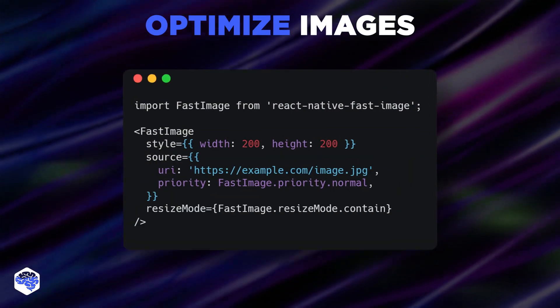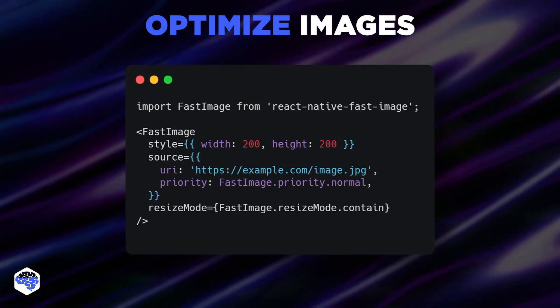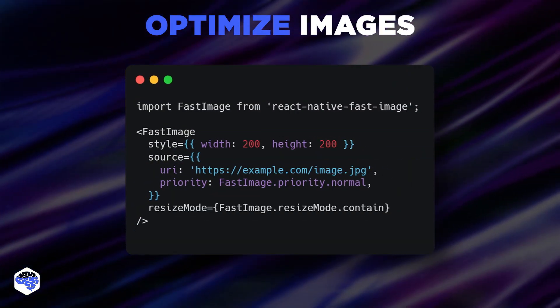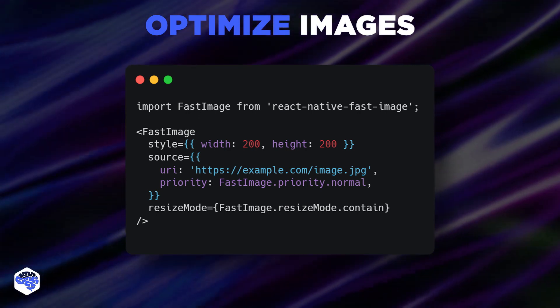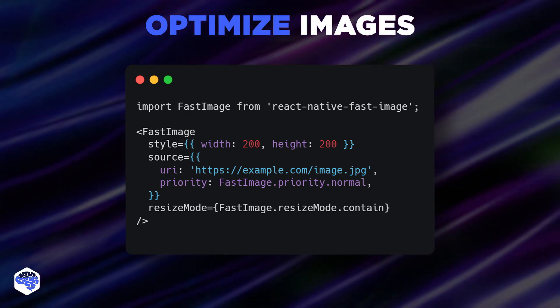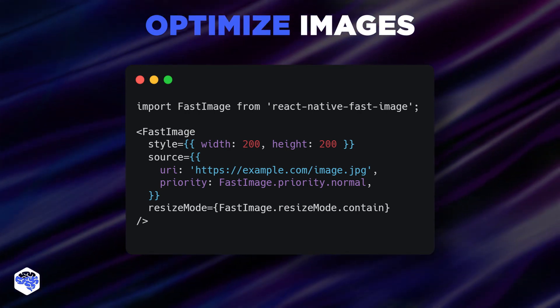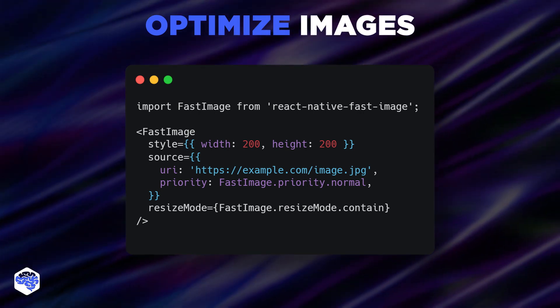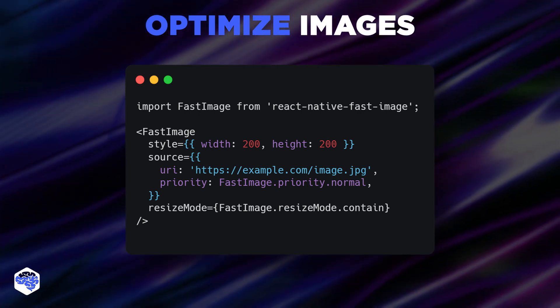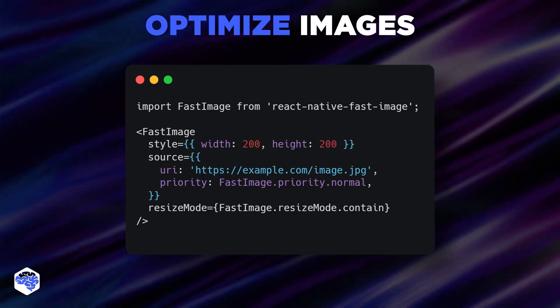You can also optimize your app's images for better performance. Use optimized images that are compressed and properly sized for your app. You can also use tools like React Native Fast Image to lazy load images and improve the loading time of your app.